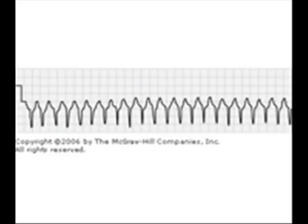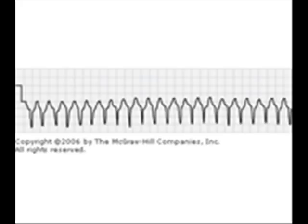Now this is ventricular tachycardia. In ventricular tachycardia you see three or more premature ventricular contractions and the QRS complex will be very wide. Whenever you see this you should think of ventricular tachycardia.